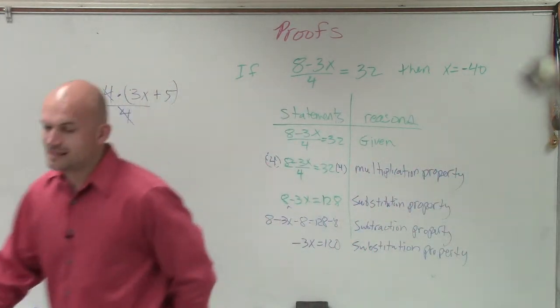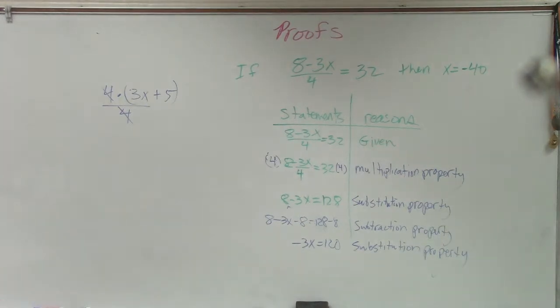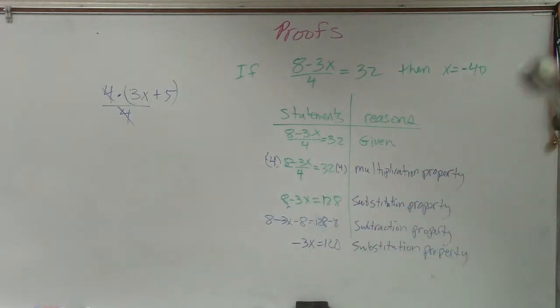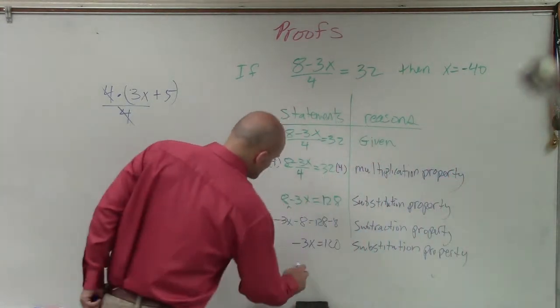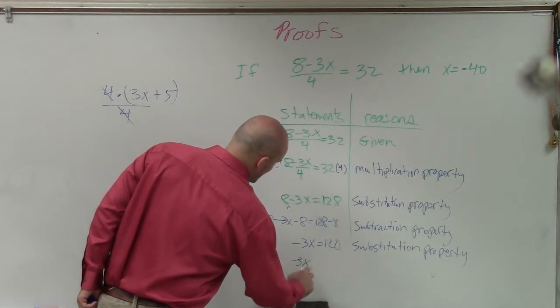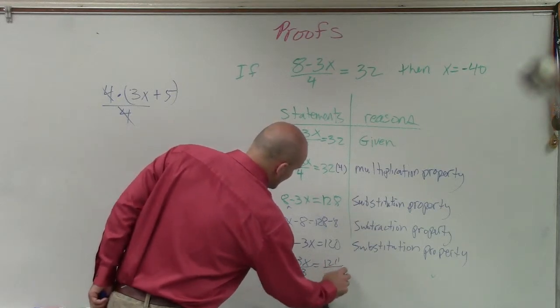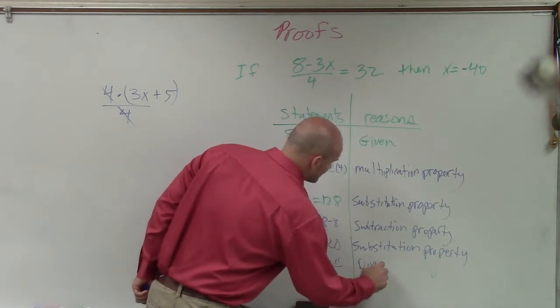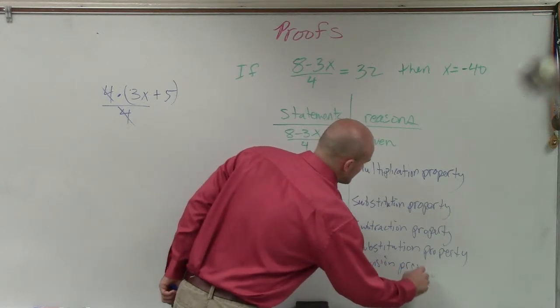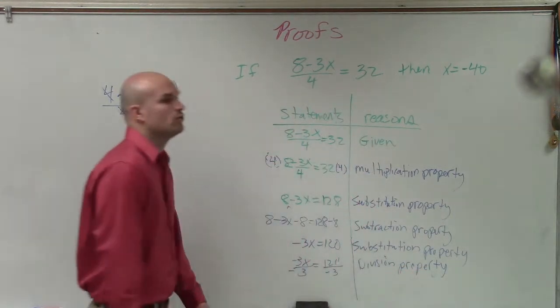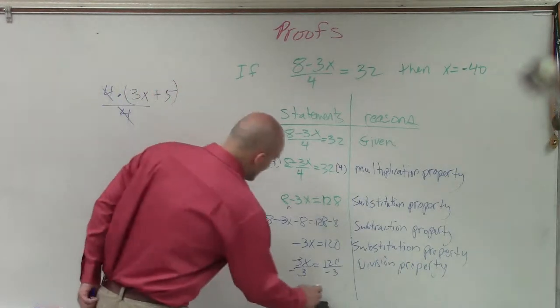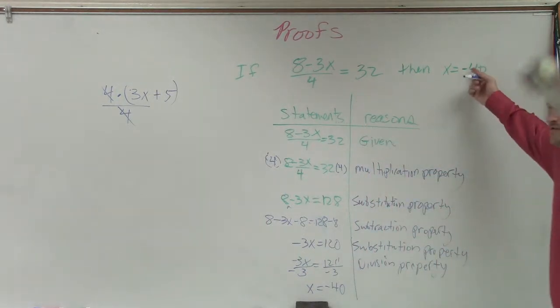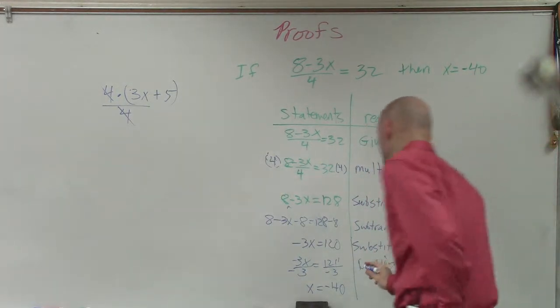All right. Then my last one, Amber, if I have negative 3x equals 120, the last thing I need to do is do what? Divide by negative 3. Divide by negative 3. So therefore, that's my last operation. So I say negative 3x divided by 3 equals 120 divided by negative 3. And we call that the division property. It's really division property of equality. Therefore, I simplify so then x equals a negative 40. And is that what we are trying to prove? Yes. So that's our final one is substitution.